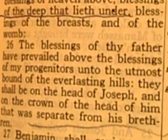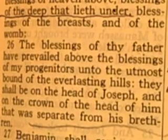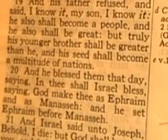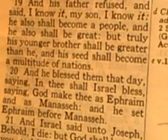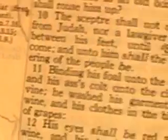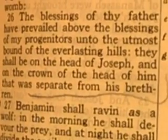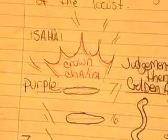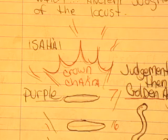The blessings of thy father have prevailed above the blessings of my progenitors unto the utmost bound of the everlasting hills. They shall be on the head of Joseph and on the crown of the head of him that was separate from his brethren. Who are the descendants of Joseph? They would be Ephraim and Manasseh, just like you see here — Manasseh and Ephraim being adopted into the 12 tribes. And then Ephraim is being exalted and actually given the name Israel. That's why nobody is telling you the truth about what this purple is — they're hoping to achieve the same thing.